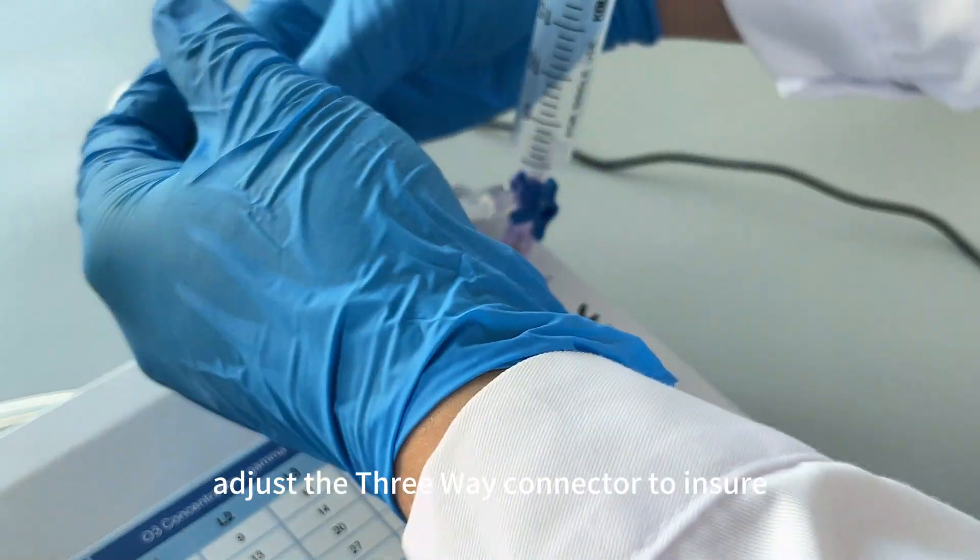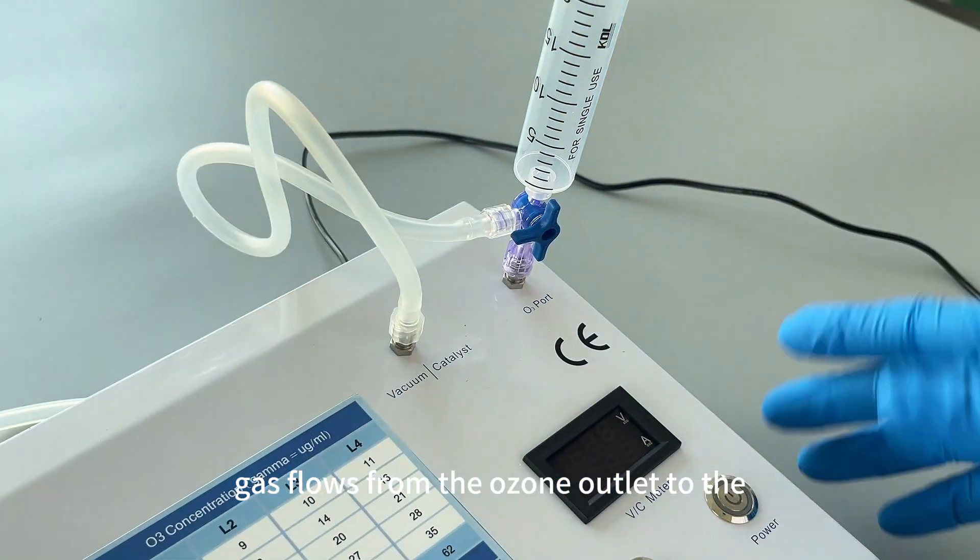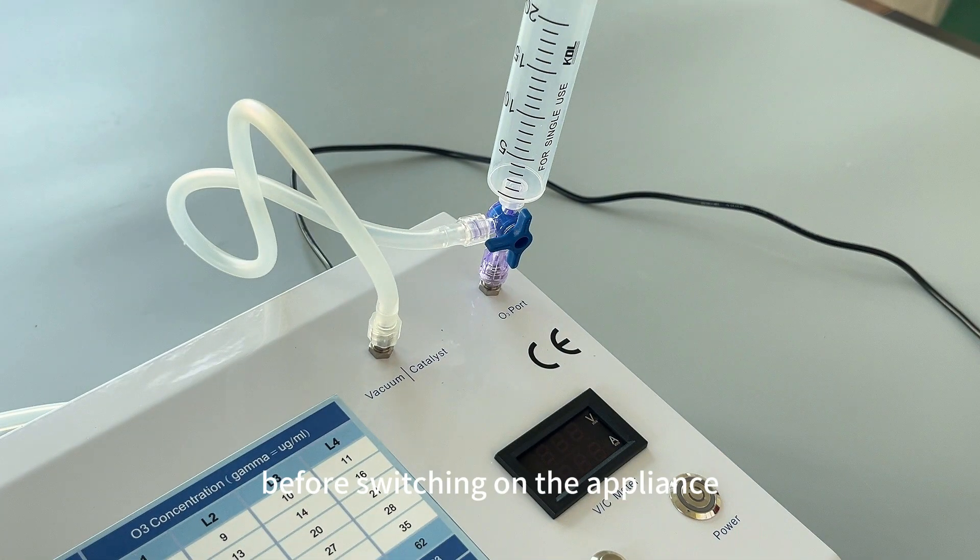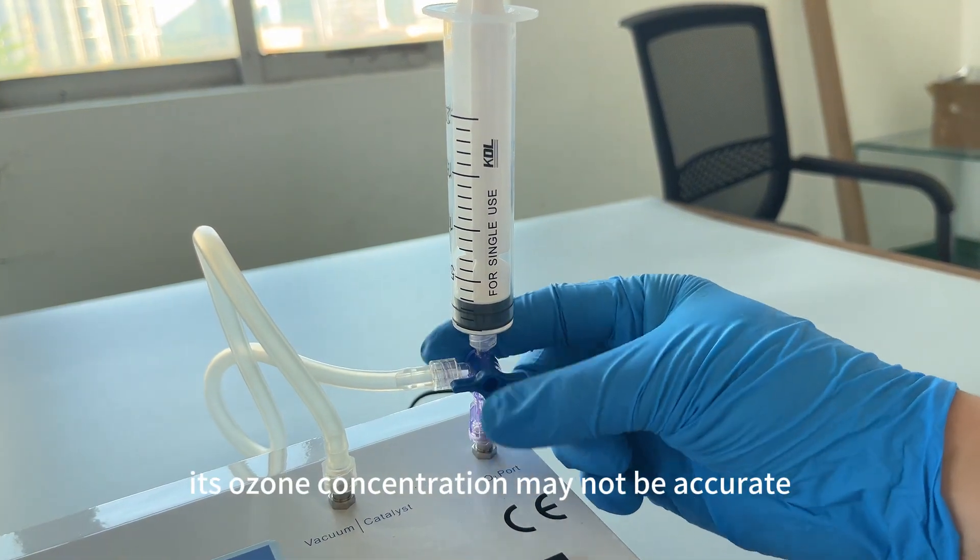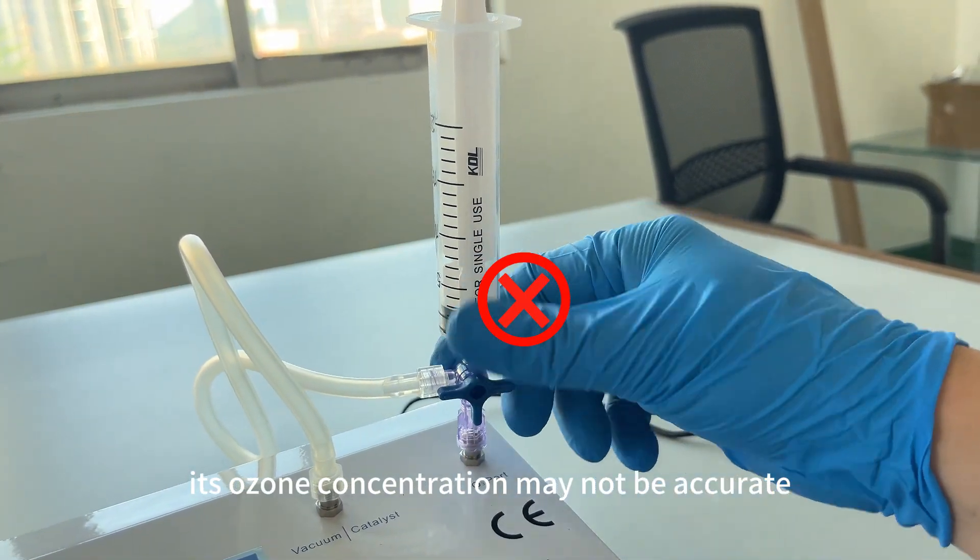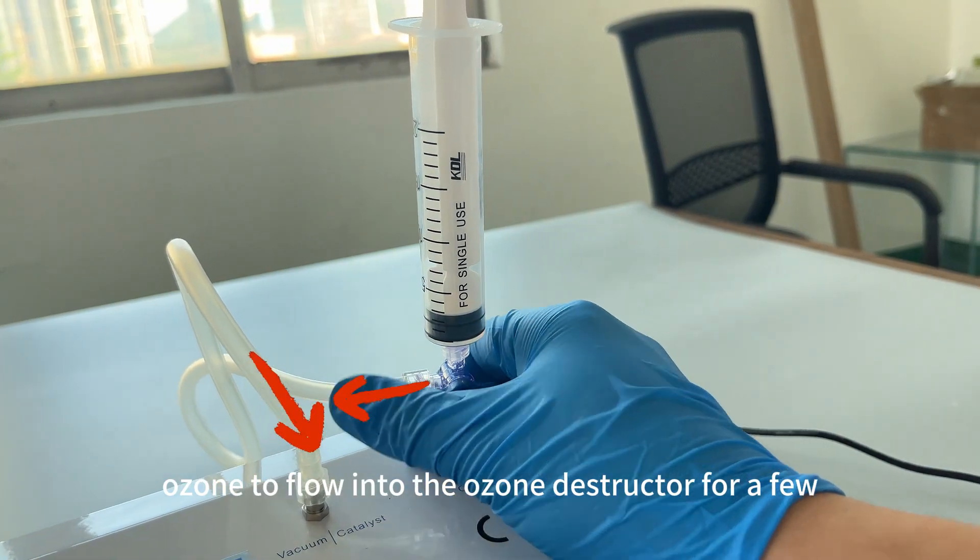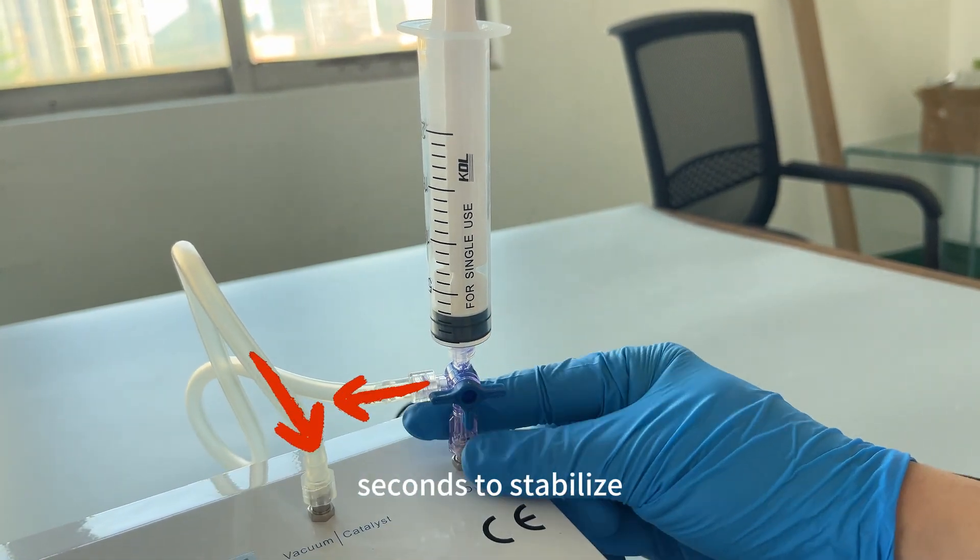Adjust the three-way connector to ensure gas flows from the ozone outlet to the ozone destructor before switching on the appliance. When the machine starts, its ozone concentration may not be accurate. Allow the ozone to flow into the ozone destructor for a few seconds to stabilize.